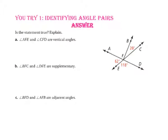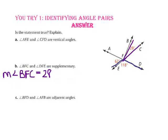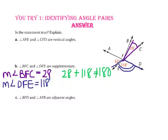Part B says angle BFC and angle DFE are supplementary. The measure of angle BFC is 28 and the measure of angle DFE is 118. Since 28 plus 118 equals 146, that does not equal 180 degrees. Therefore, the angles are not supplementary.